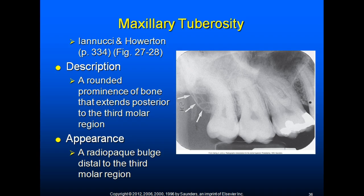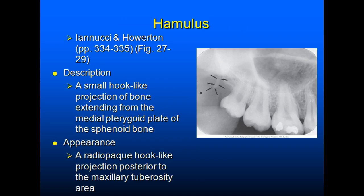The hamulus, also known as the hamular process, is a small hook-like projection of bone extending from the medial pterygoid plate of the sphenoid. It appears as a radiopaque hook-like projection seen posterior to the maxillary tuberosity area. The radiographic appearance of the hamulus varies in length, shape, and density from person to person.